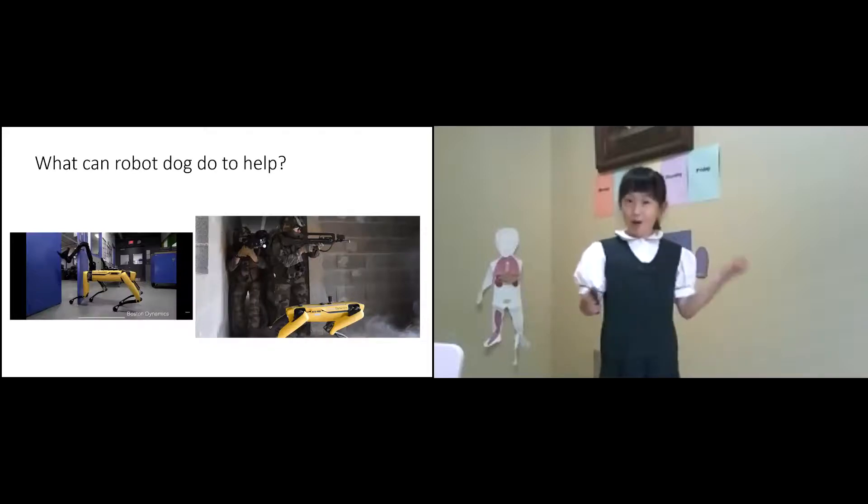What can the robot dog do to help? It can open doors all by itself, and they can go to dangerous places that people can't go, like a gas leak, or places that are too small for people to fit through.